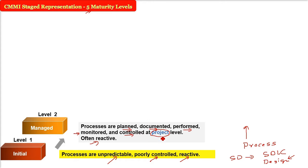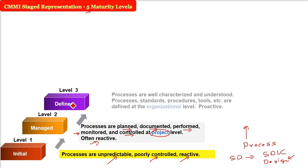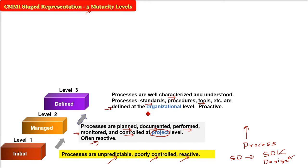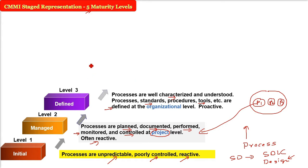Level three is called Defined. All processes are well-characterized and well-understood. The standards — which may be defined by the organization itself — along with procedures, tools, and tasks, are defined not just at the project level but at the organizational level as a whole. An organization may have multiple projects, and level three covers all of them.